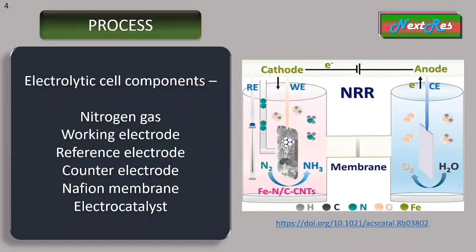These include a nitrogen gas cylinder, a working electrode, reference electrode, counter electrode, a Nafion membrane, and obviously an electrocatalyst. If you want to learn in detail about the electrodes, you can learn from any electrochemistry book or you can also find it on YouTube.